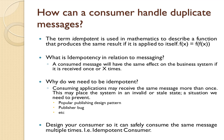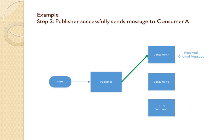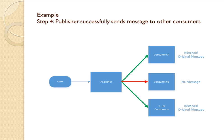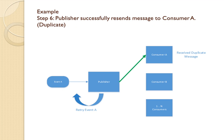The bottom line is: design your consumer so it can safely consume the same message multiple times. For example, in the publishing system there's an event — someone has sold something. The publisher sends the message to consumer A, which processes it fine. It then sends to consumer B, but there was a network failure and the message did not reach consumer B. The publisher then retried and resent the event to all consumers, so consumer A received the duplicate message again.